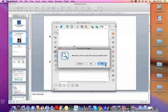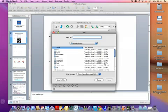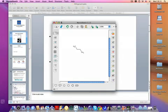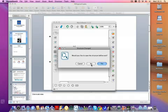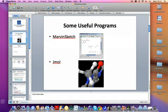Right, so MarvinSketch is one program that comes in handy just for basic structure drawing. And then to look at stuff in 3D, really JML is a great program. And I won't demo JML for now in the interest of time, but you can load structures into JML and rotate them and translate them in three dimensions to really get a good idea of molecular structure in three dimensions. So using those, perhaps even as you follow along with the lectures, may come in handy.